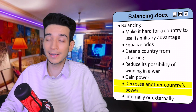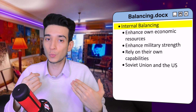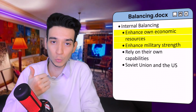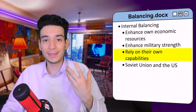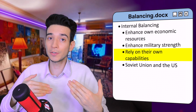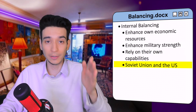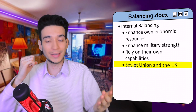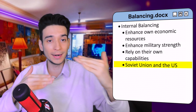Balancing can be done internally or externally. Internal balancing is when a country enhances its own economic and military resources so it can rely on its own independent capabilities in response to a more powerful country. An example is the US and the Soviet Union during the Cold War, where both countries were increasing their capabilities internally to balance each other.